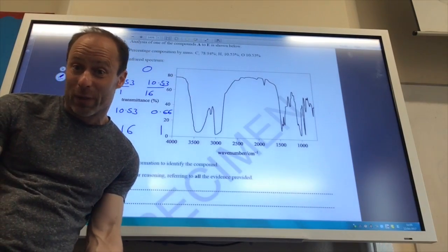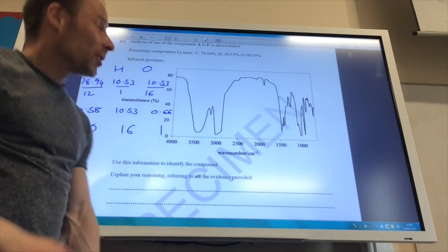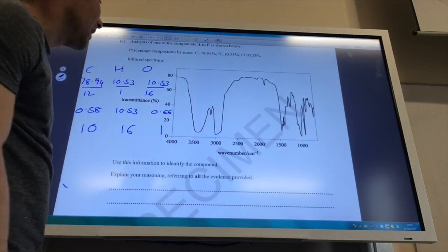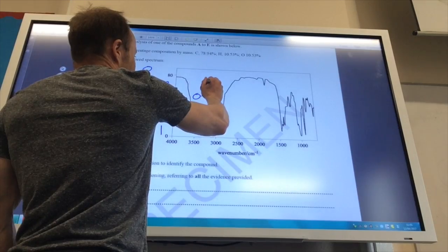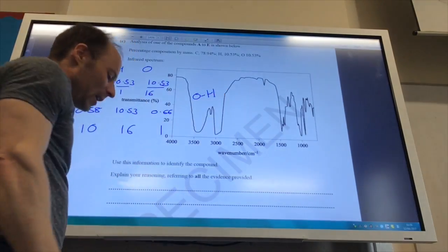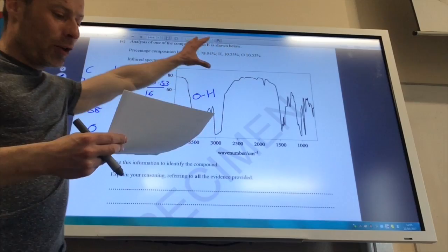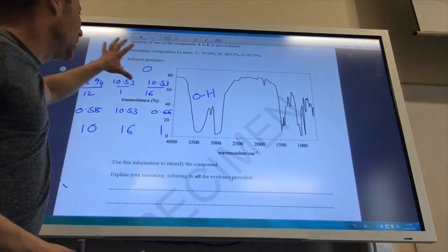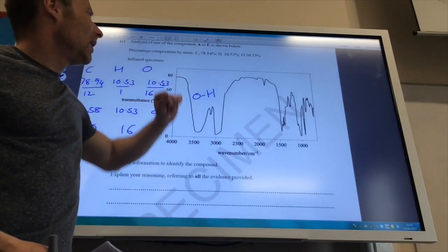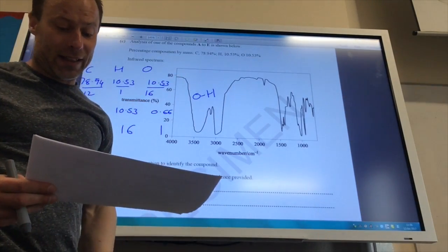Okay, so that's that done. But you do need to use the IR. So let's just make sure we've got the IR. What does this massive broadband show? Well, that's showing me I've got an OH group. So based just on the IR, it could be A or C, because both of them have an OH group. However, looking at this with my formula, I know it's going to be C.